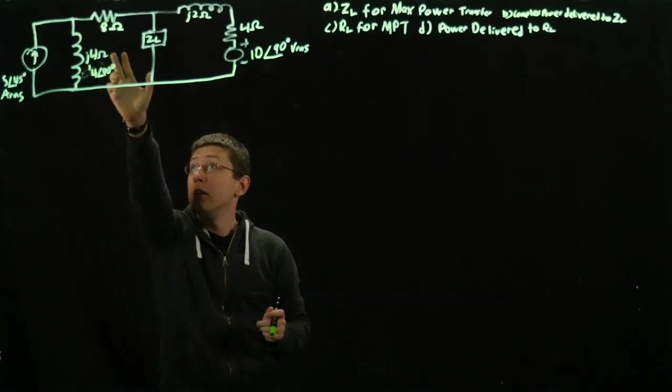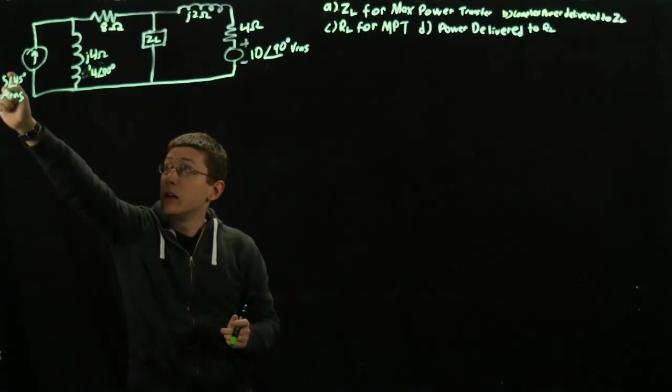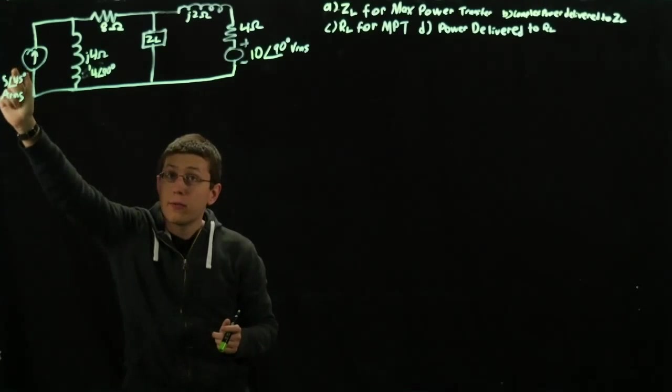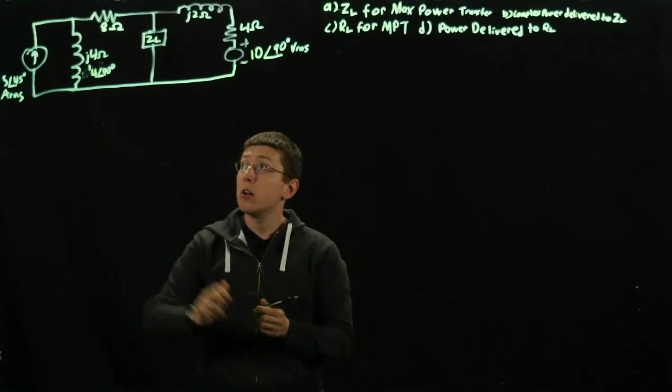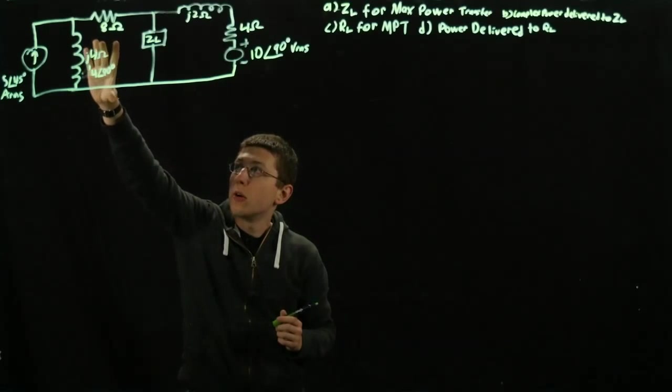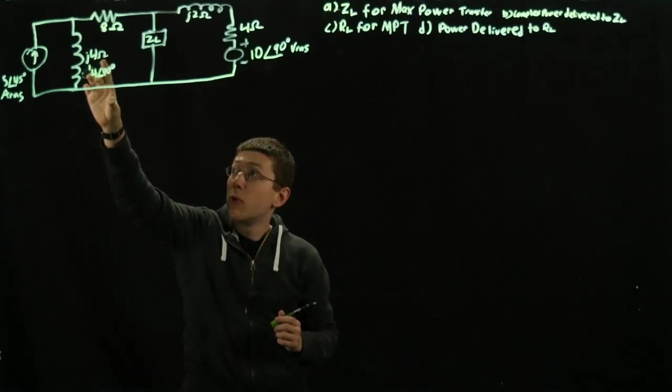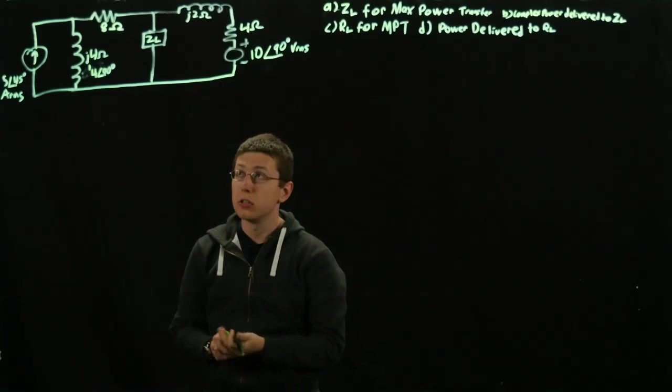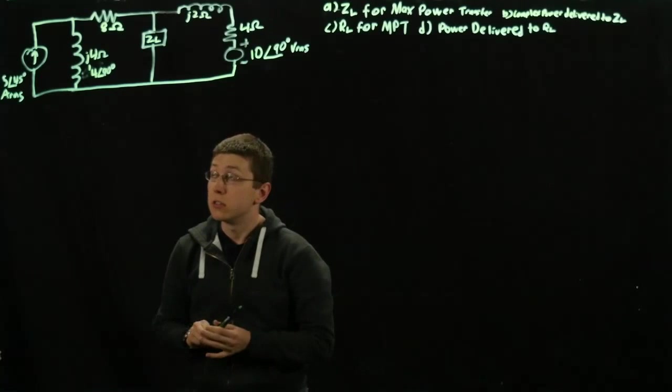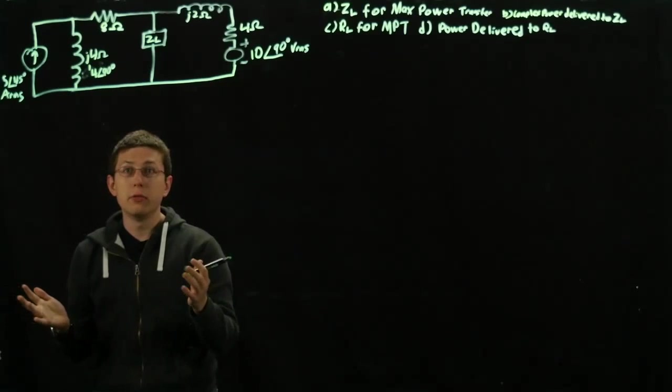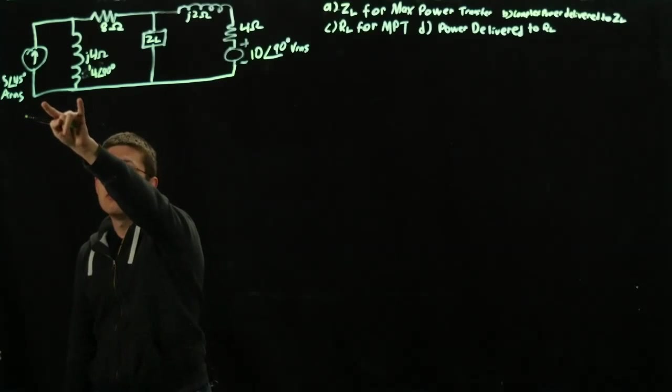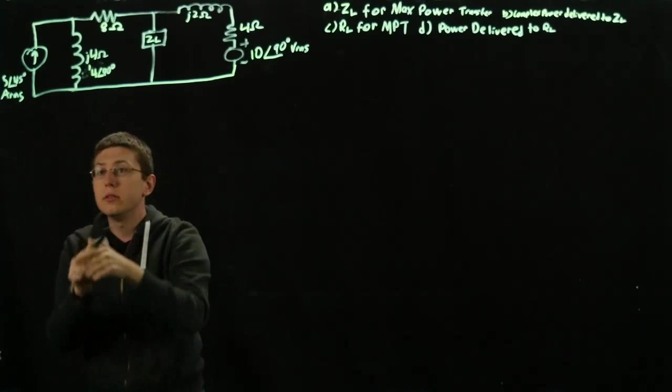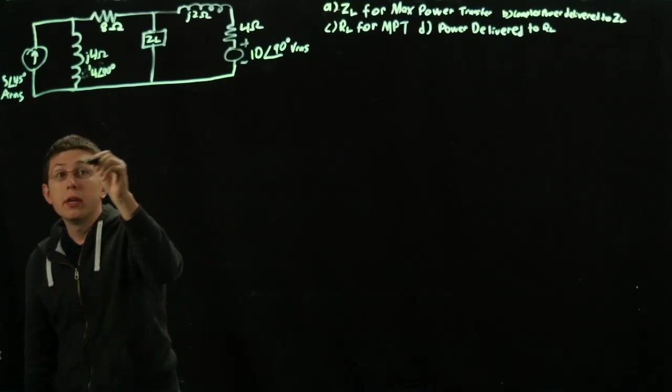We have an inductor with a value of J4 and a current source with a value of 5 amps at 45 degrees. We could rewrite J4 as magnitude 4 with an angle of 90 degrees, because that's all J really is. Because we know V equals IR, multiplying our IR gives us our V. So we're going to multiply these two values.